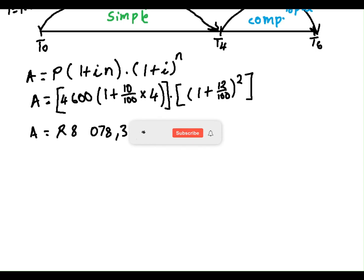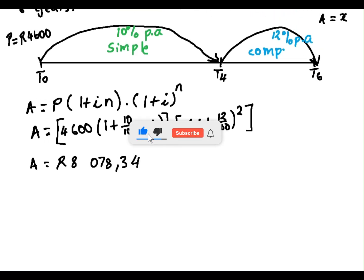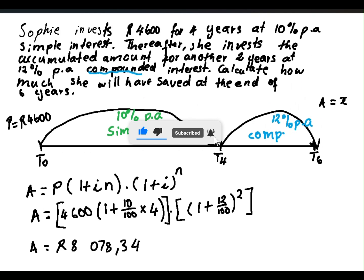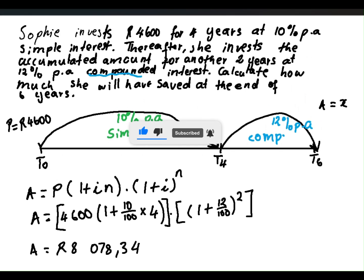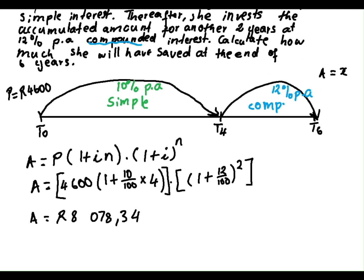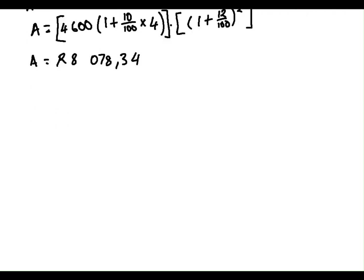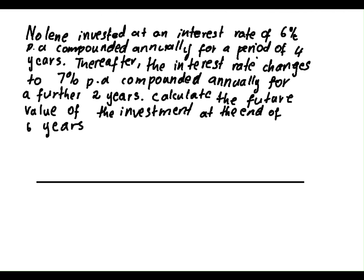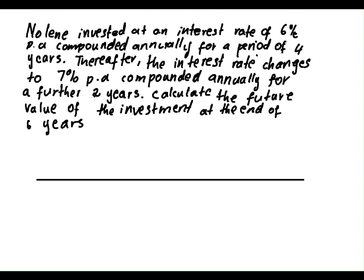So, hopefully I am making sense. If you have any questions, please post them in the comment section below. Let's go to our next question. On our next question, we have Nolene. Nolene invested at an interest rate of 6% per annum compounded — it is most important that we know it is compounded — for a period of 4 years.